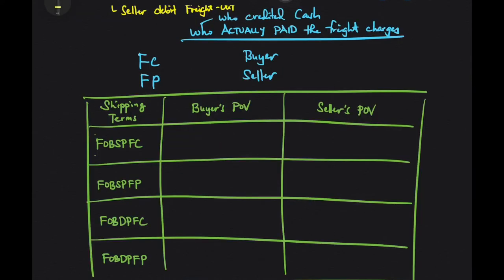To illustrate: first, FOB shipping point freight collect. FOB shipping point tells you it is the buyer who should shoulder the obligation, so the buyer debits freight in. Freight collect tells you the buyer credits cash — the buyer pays cash. So under the buyer's books, debit freight in, credit cash. Under the seller's books, no journal entry.